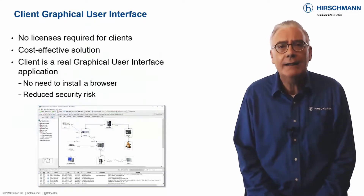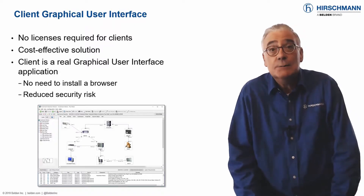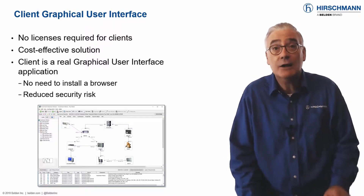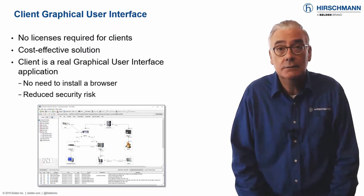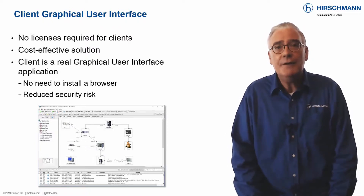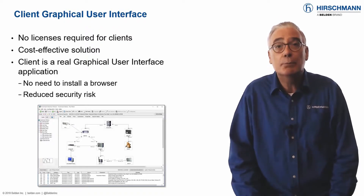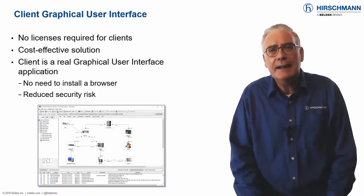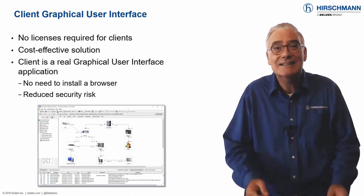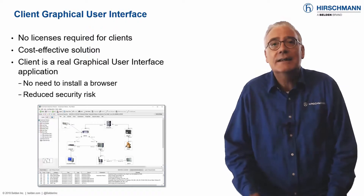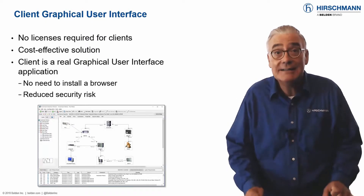Industrial HiVision is a client-server application. The server is the core of the system and is responsible for polling the network devices and correlating the received information. The server requires a license. The client provides the graphical user interface to the server. Many network management applications use a browser as a client, but browsers cannot be used on industrial networks due to the heightened security risk. For this reason, the Industrial HiVision client was developed as a stand-alone application in place of a browser.